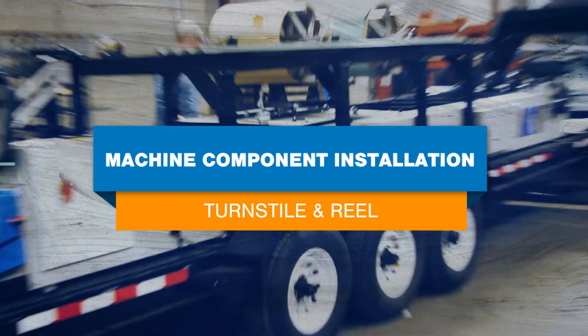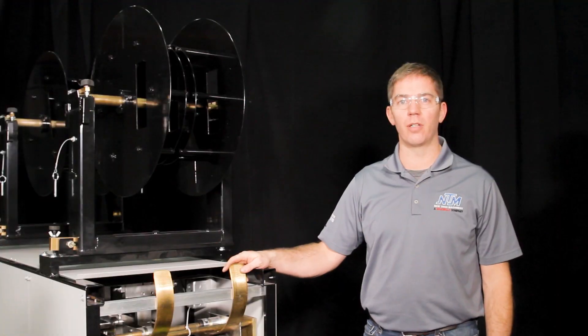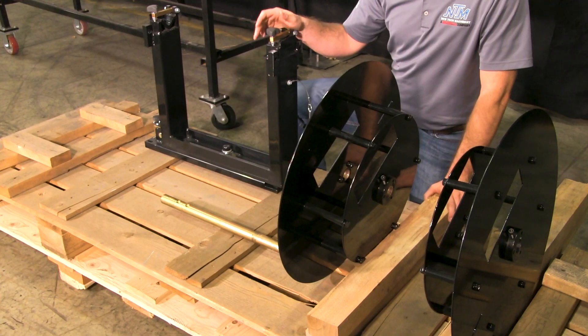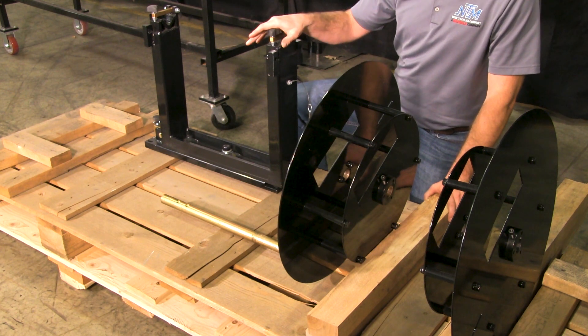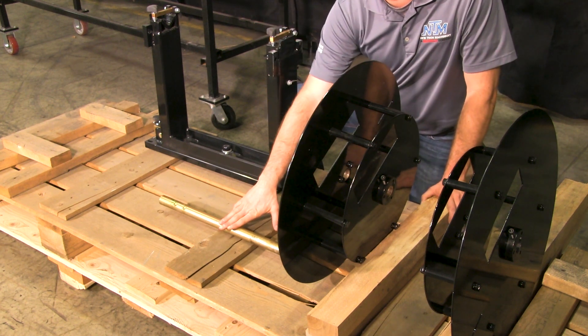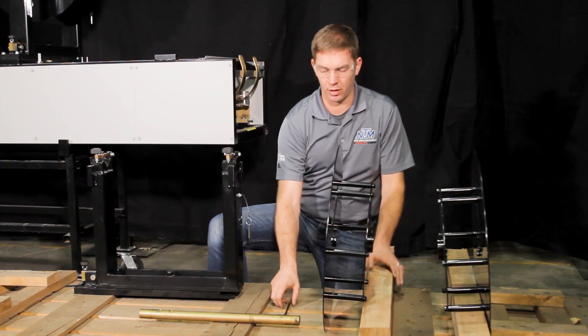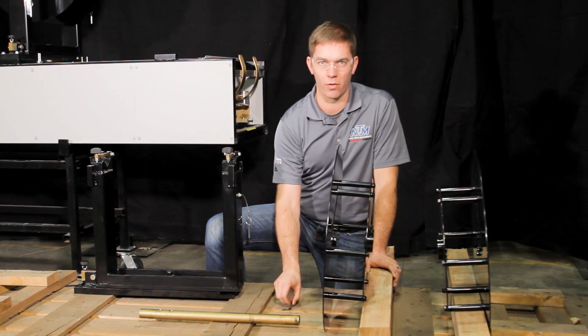Before you get into the installation you will receive a few components that you will have to assemble prior to installation. Items you see here are the turnstile, shaft for the reel, two halves of the reel itself, and quarter-inch Allen key for assembly.